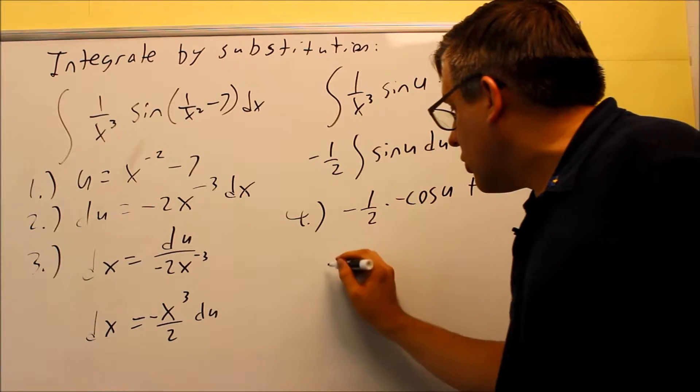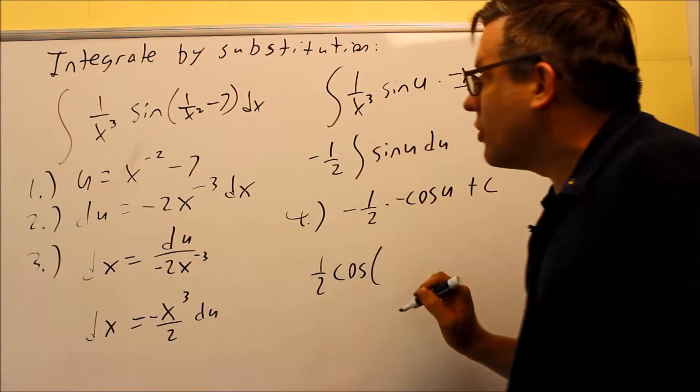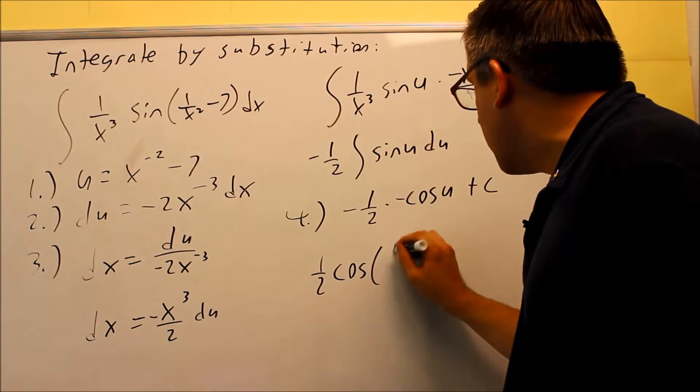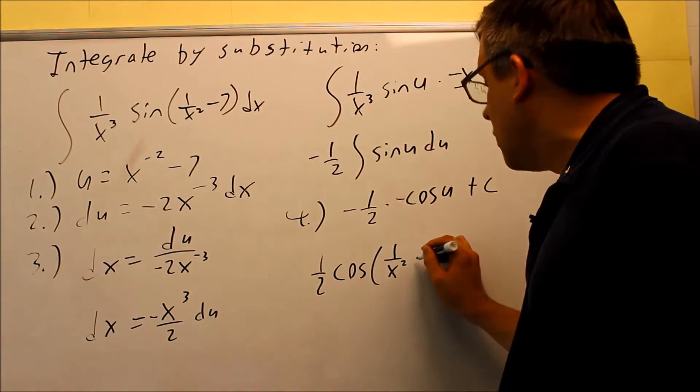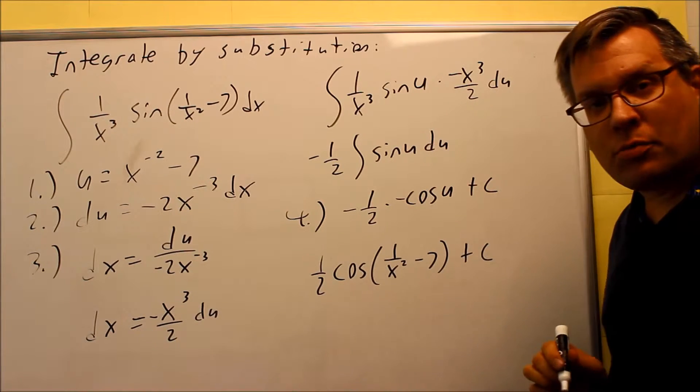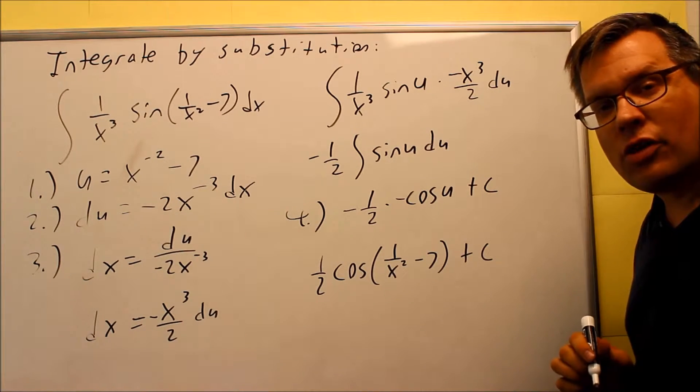This is going to turn into a positive 1 half cosine, and then I'll just put the u back in, which I'll write it this way, 1 over x squared minus 7, and again, don't forget about the plus c in the end since it's an indefinite integral.